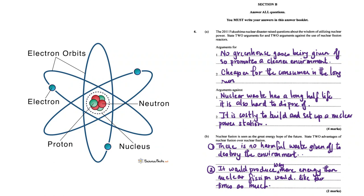The first question: the 2011 Fukushima nuclear disaster raised questions about the wisdom of utilizing nuclear power. State two arguments for and two arguments against the use of nuclear fission reactors. Arguments for: first of all, no greenhouse gases are given off, so it promotes a cleaner environment. Examples of greenhouse gases include carbon monoxide and carbon dioxide.